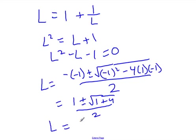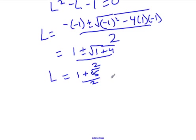So I get 2 values for L: 1 plus root 5 out of 2, and 1 minus root 5 out of 2.